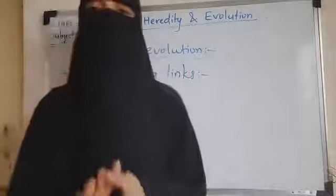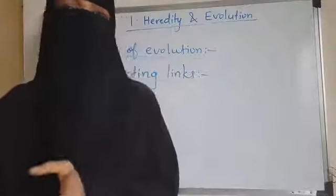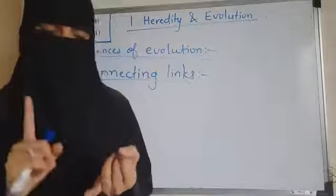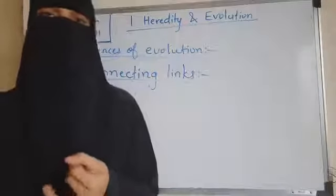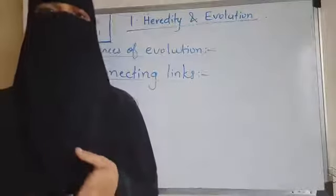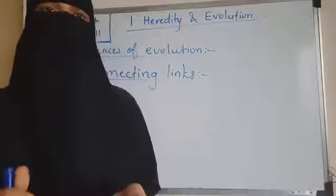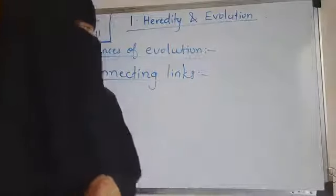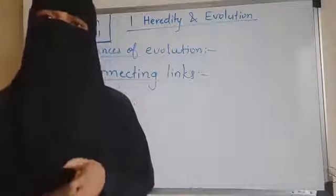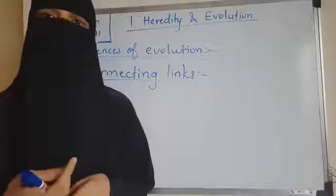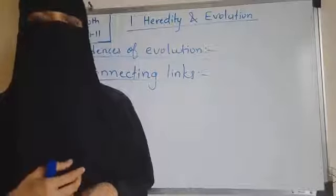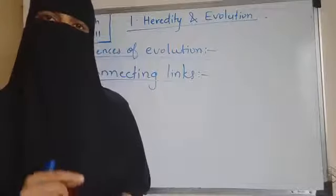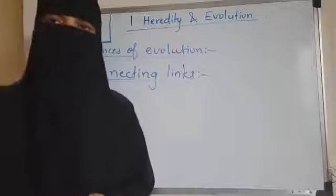So far we have seen all the evidences: morphological evidence, anatomical evidence, paleontological evidence, embryological evidence, vestigial organs, and connecting links. All the evidences have been completed. In our next video we will study Darwin's theory of natural selection, and Lamarckism — one small concept that we will also see.